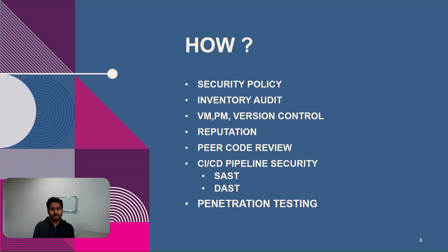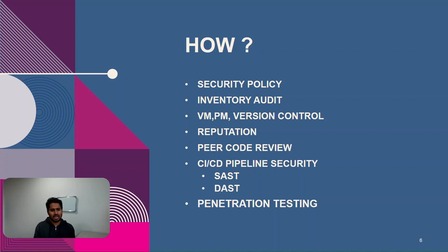Reputation is another important exercise developers need to carry out — check whether the open source library has been breached in the past, whether it maintains security hygiene, and whether it is in compliance with certain security standards and frameworks. This extends assurance that they take security seriously and have a security-thought-through approach. Peer code review is another security control organizations can include in their security policy.